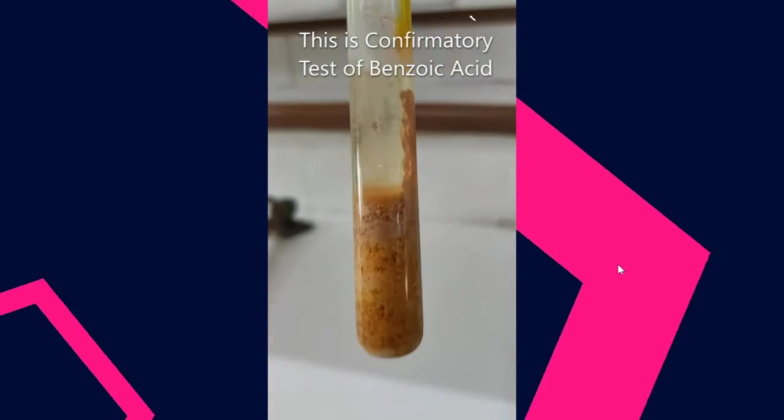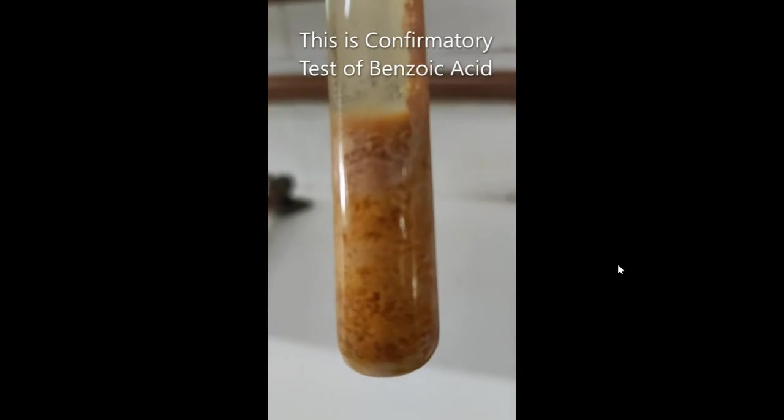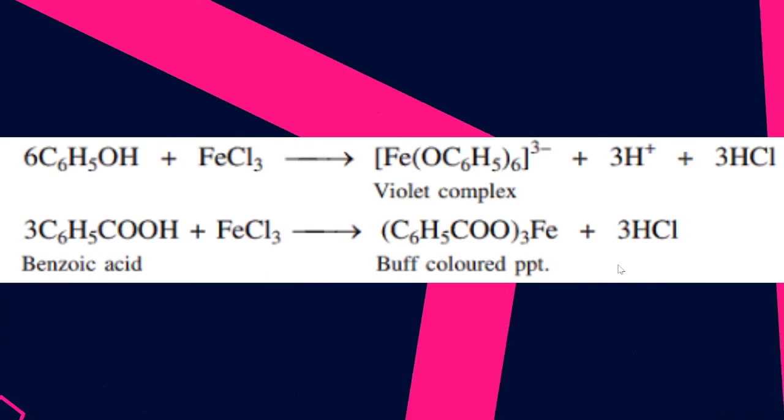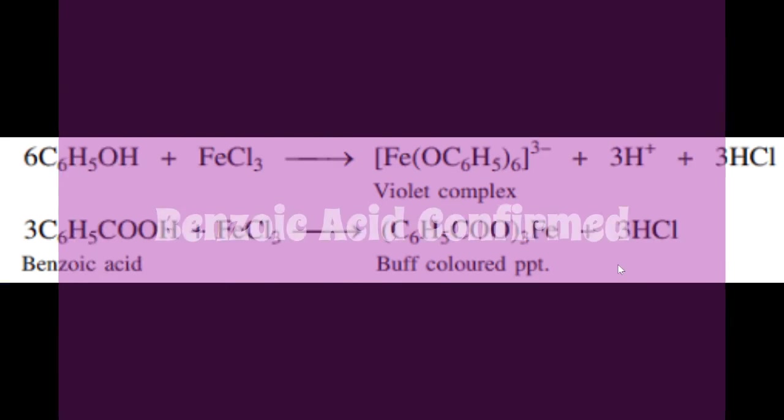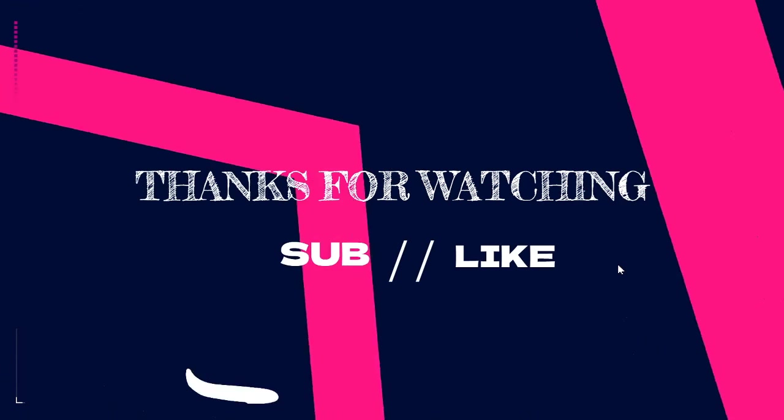The only trick is making the ferric chloride solution neutral because that is acidic. You have to add ammonium hydroxide or sodium hydroxide. You can see the reaction, the buff colored precipitate is of ferric benzoate. So I guess with that, you are able to understand how to confirm benzoic acid.